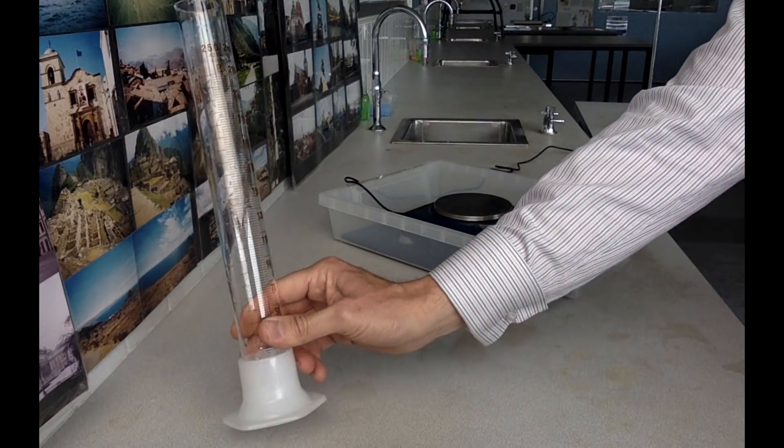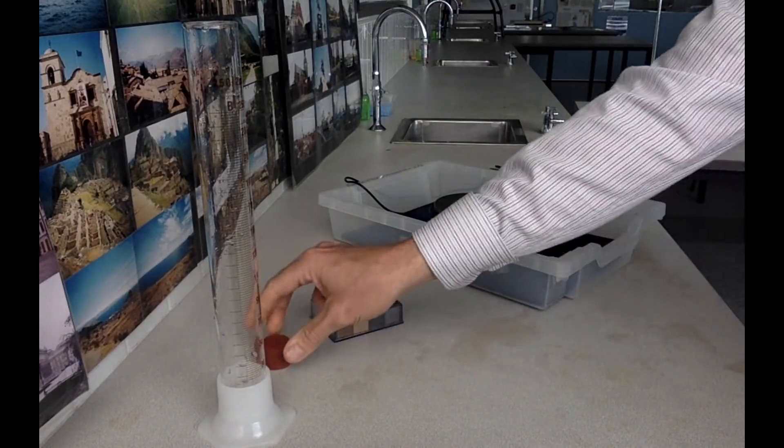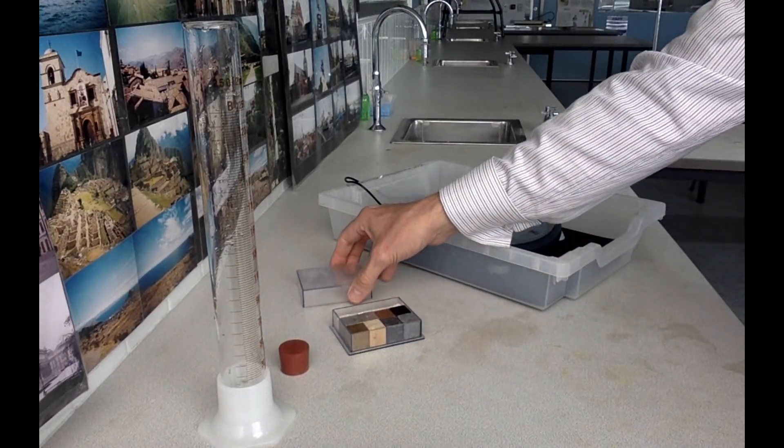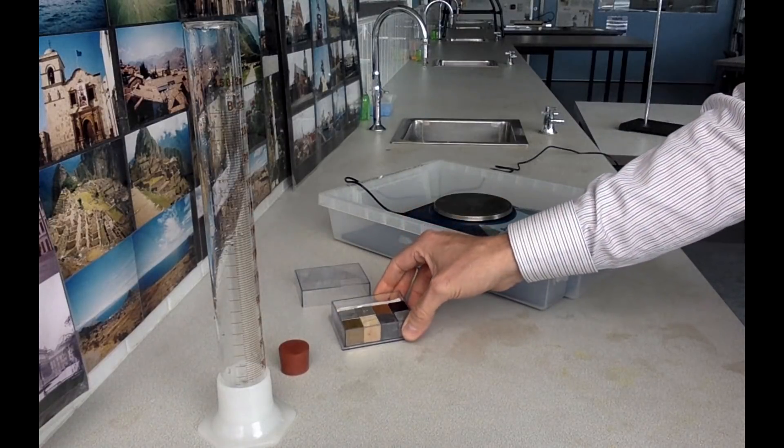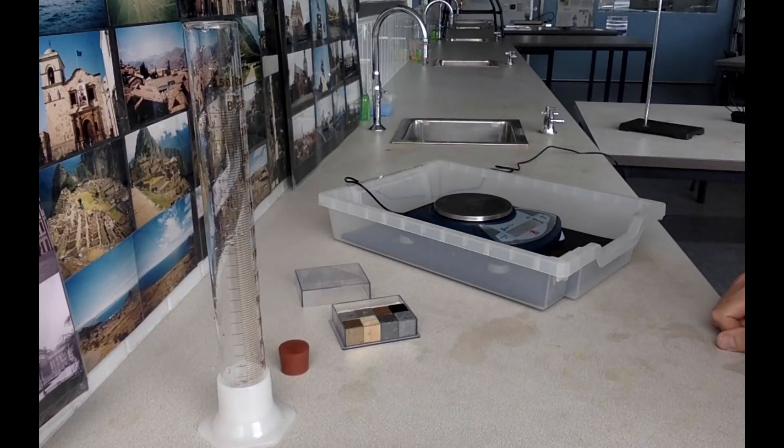First of all, we've got a 250 ml glass measuring cylinder, a rubber bung, a tray of metal cubes that we're going to measure the density of, and an electronic balance. We also need access to tap water.